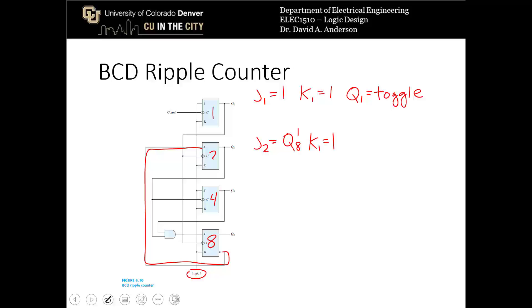And then the input to K1 is 1. So Q8 prime normally is a 0, which means that J2 is, or I'm sorry, Q8 is a 0, which means Q8 prime is a 1, which means that Q2 is often going to be toggling unless Q8 is a 1, then J2 is a 0, and K1 is a 1, which means that we reset that output. J4 and K4 are both going to be a 1, which means that Q4 is going to always toggle.